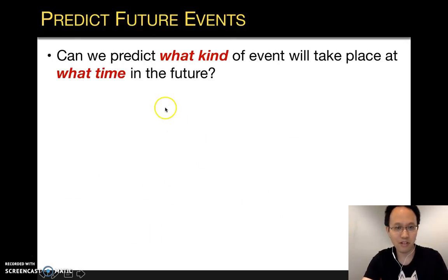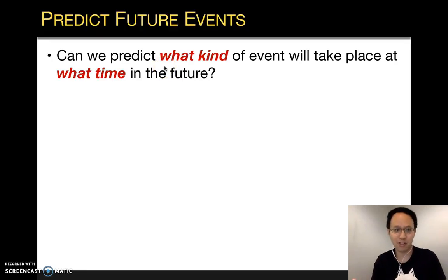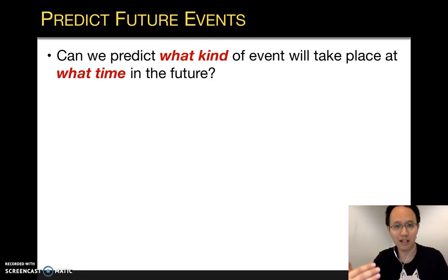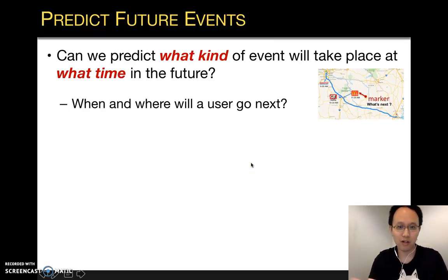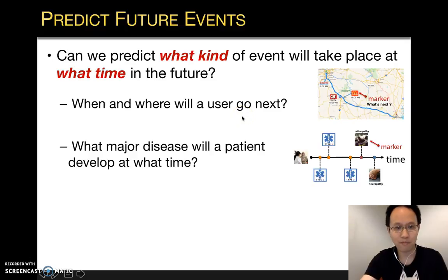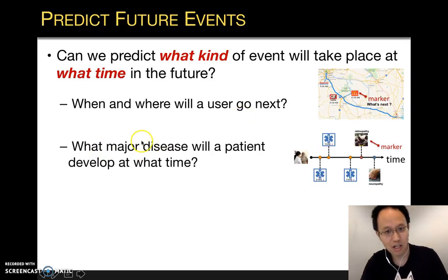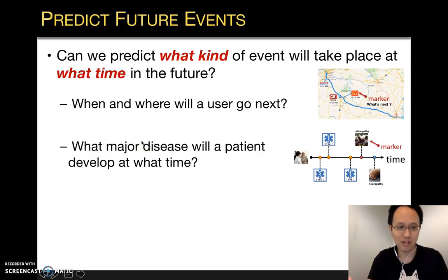So although this event data arise from quite different domains, based on the history, can we predict what kind of event will take place at what time in the future? More specifically, given a traveling trace, can we predict when and where a user will go next? And given a sequence of clinical diagnoses, can we predict what major disease a patient might develop at what time in the future?